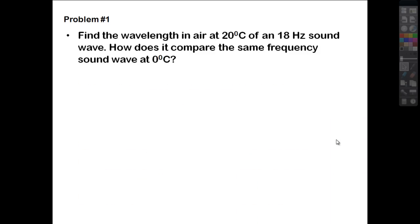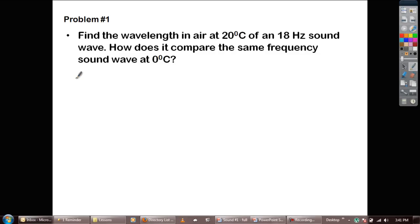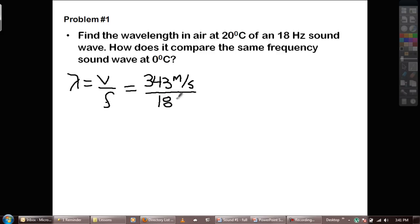So here's a quick little problem. Find the wavelength in air at 20 degrees Celsius of an 18 hertz sound wave. So to do that, I'm going to use my handy dandy little writing pad. So remember, wavelength, ugliest lambda ever, equals V over the frequency. You find the speed of sound at 20 degrees Celsius from your chart on the previous slide. 343 meters per second. You divide that by your frequency, which is 18 hertz. You put it in your calculator. You get 343 divided by 18. And you get about 19.1 meters.